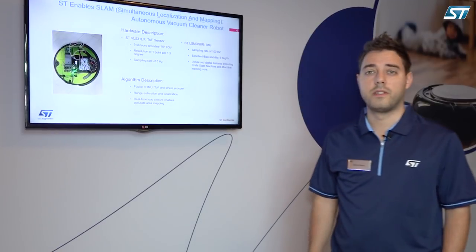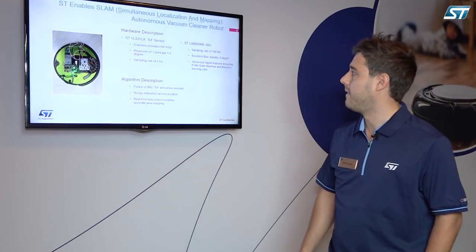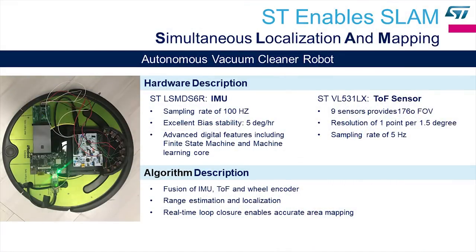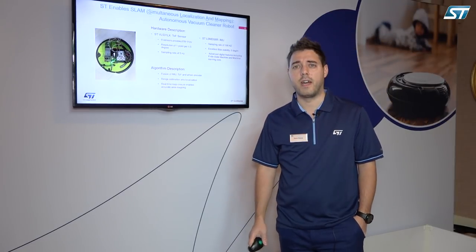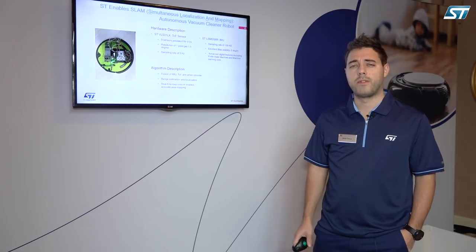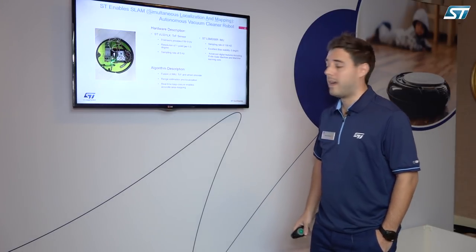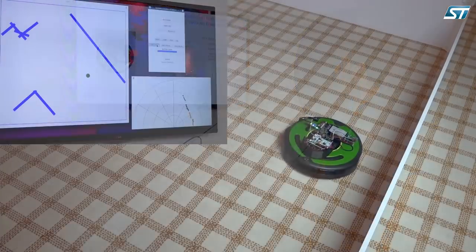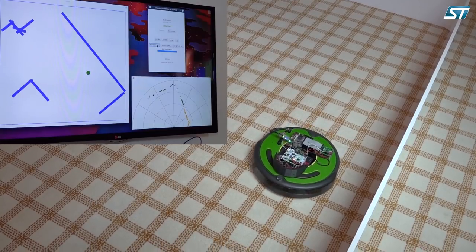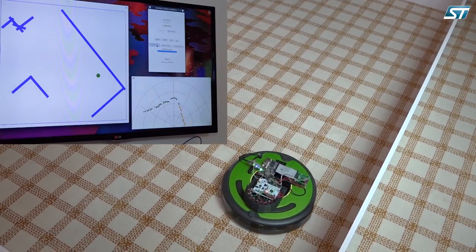This is the other description of the demo. We have our VL53L1X time-of-flight sensor. Those 9 sensors provide a 176-degree field of view, with a resolution of 1.5 degrees and a sampling rate of 1.5 Hz. We also have the LSM6DSR IMU, with a sampling frequency of 1.5 Hz, an excellent bias stability of 5 degrees per hour, and digital features including a finite state machine and machine learning core.